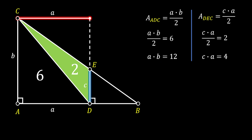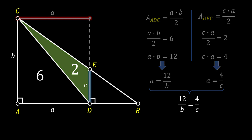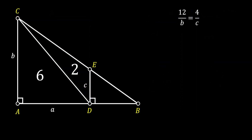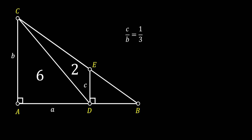From the left equation we can conclude that a must be equal to 12 over b, and from the right equation we can conclude that a is equal to 4 over c. Since both of those equations are equal to a, this means that 12 over b must be equal to 4 over c. Working through this by cross-multiplying, we simplify to get that c over b must be equal to 1 over 3.